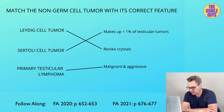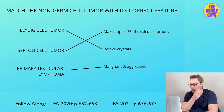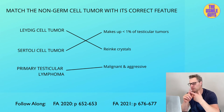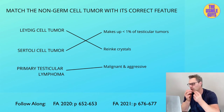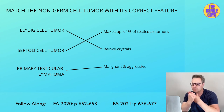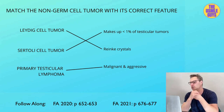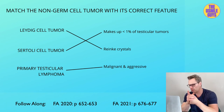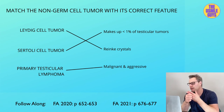Let's turn our attention to the non-germ cell tumors: the Leydig cell tumor, Sertoli cell tumor, and primary testicular lymphoma. First is the Leydig cell tumor. This is usually benign and contains unique eosinophilic cytoplasmic inclusions known as Reinke crystals. Because this tumor produces estrogens and androgens, watch for signs of precocious puberty as well as gynecomastia, which is breast tissue enlargement in males. As a quick review: gynecomastia can be normal in infants, in boys undergoing puberty, and in elderly men.